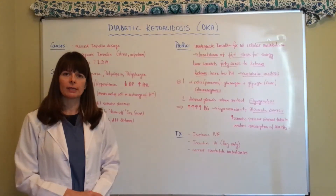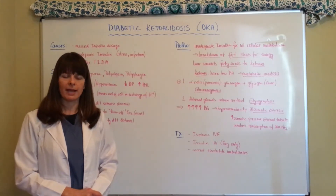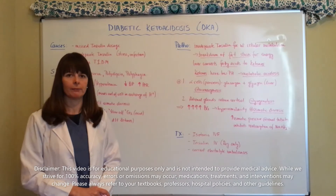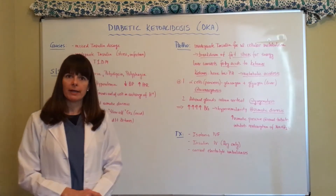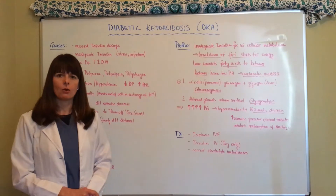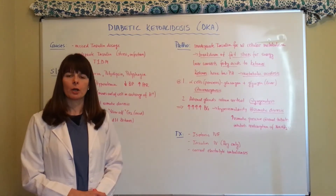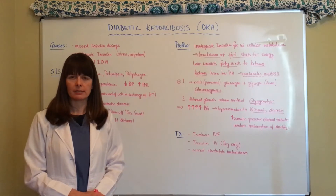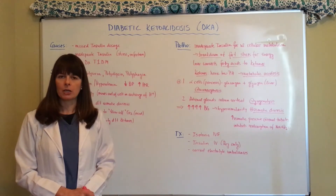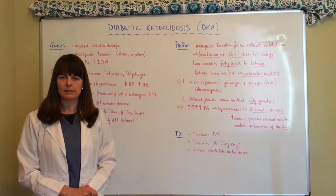Welcome to Nursing School Explained. Today's topic is diabetic ketoacidosis, or DKA. It mostly affects type 1 diabetics, and if you haven't already done so, please watch my video on the comparison of type 1 and type 2 diabetes. DKA is a complication that is associated with type 1 diabetics.